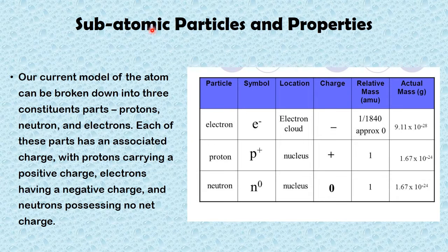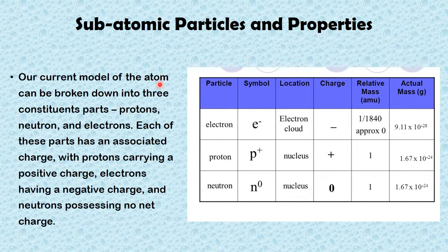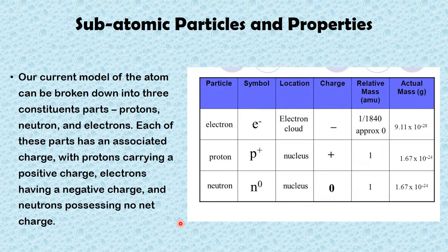Now we'll be looking at subatomic particles and their properties. Our current model of the atom can be broken down into three constituent parts: the proton, the neutron, and the electron. Each of these parts has an associated charge — protons carry a positive charge, electrons have a negative charge, and neutrons possess no net charge.